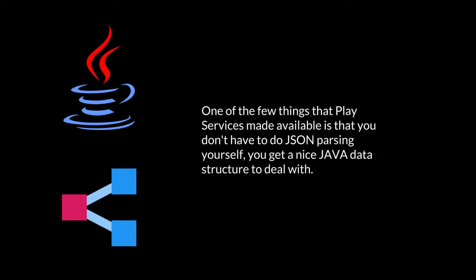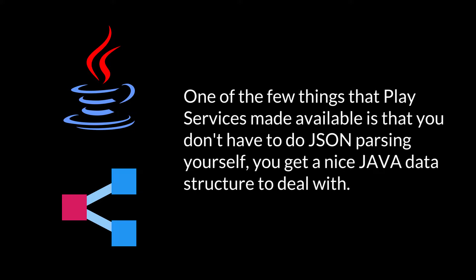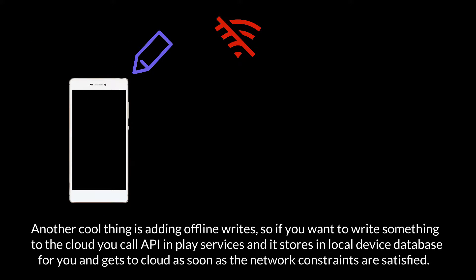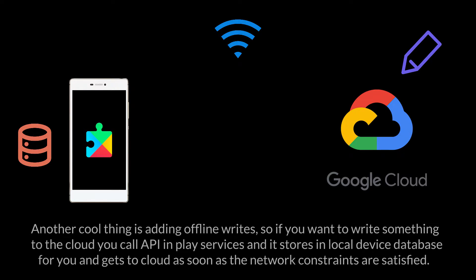One of the things that Play Services made available is that you don't have to do JSON parsing yourself — you get a nice Java data structure to deal with. Another cool thing is adding offline writes. So if you want to write something to the cloud, you call the API in Play Services and it stores it in a local device database for you and syncs to the cloud as soon as the network constraints are satisfied.